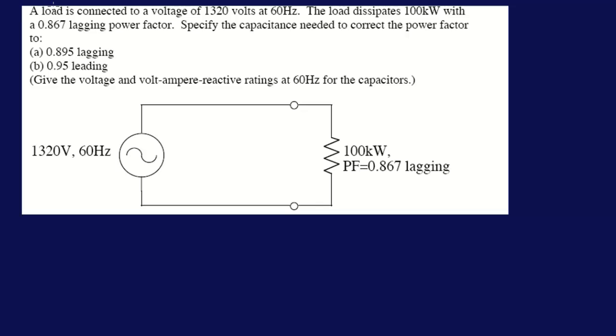A power factor was given initially and then we want to correct it to 0.895, and the capacitance to do that is actually what we need to find. In order to do that, the difference in reactive powers from the first one, the 0.867, and then the 0.895, that difference in reactive powers must be supplied by the correction capacitor. If you know that difference we can go from there to find the capacitance. So let's find the reactive power from the 0.867.